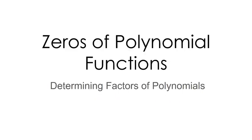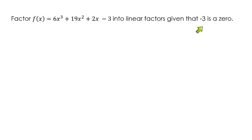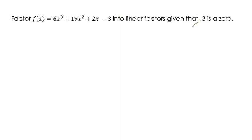In this video we're going to determine factors of polynomials when we're given one of the zeros. We have a cubic function — its highest degree is 3 — so we can't factor it like we factor quadratics. But we're given that negative 3 is a zero, meaning an x-intercept, so the related factor is x plus 3.